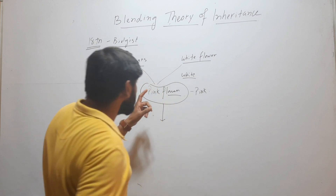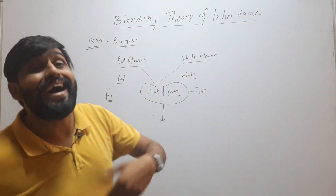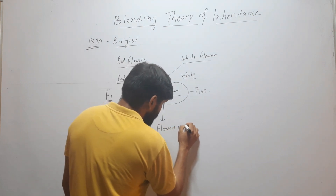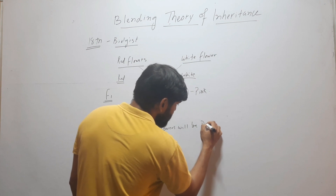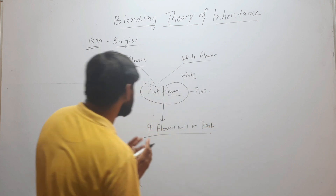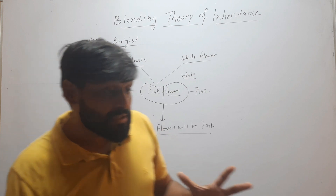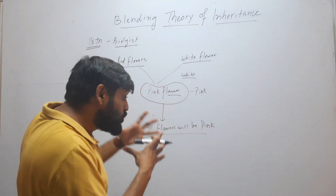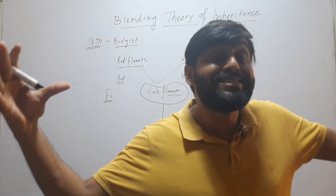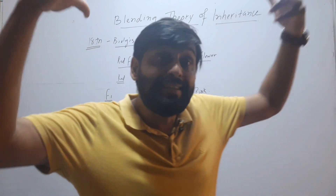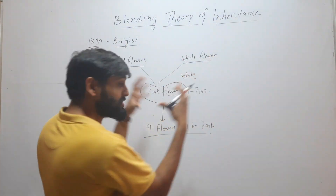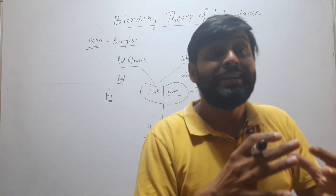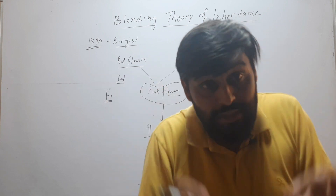And then when we cross this pink flower plant with another pink flower plant, all flowers will be pink. So according to this theory, characters of both parents mix together, and a new trait arises by mixing two existing traits present in the parents. So here we have two traits — red and white — they mix together and form pink color.